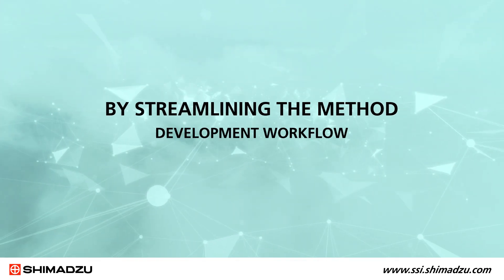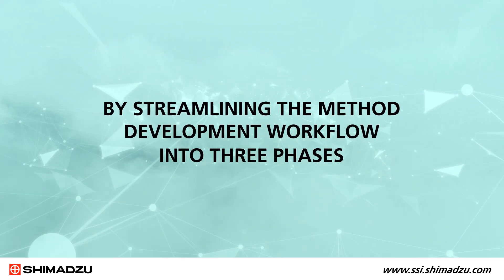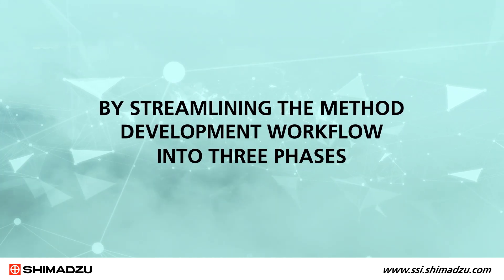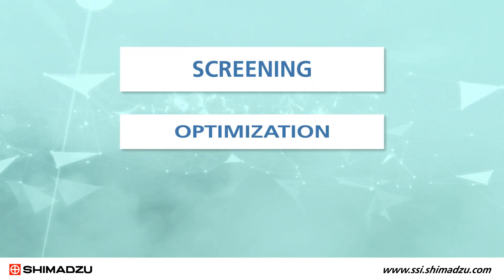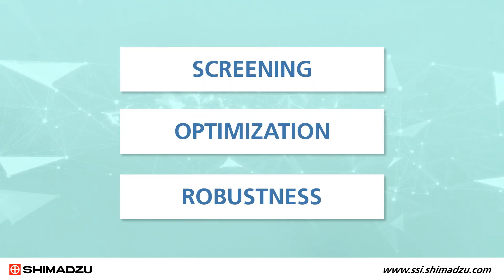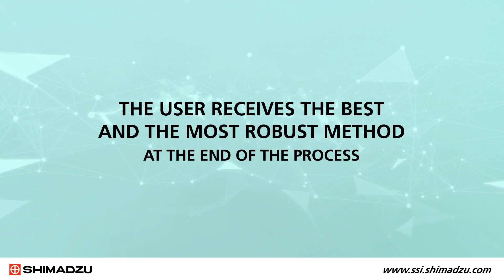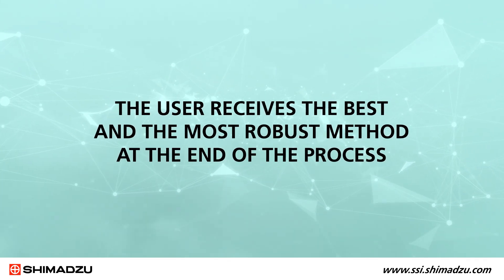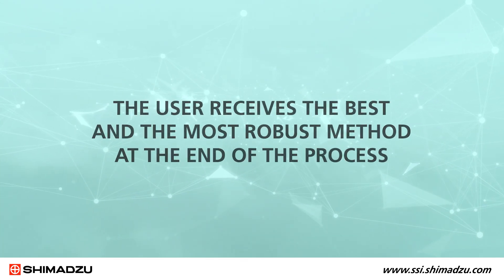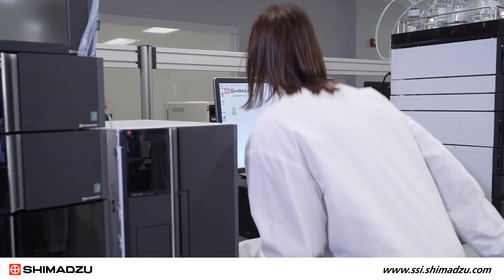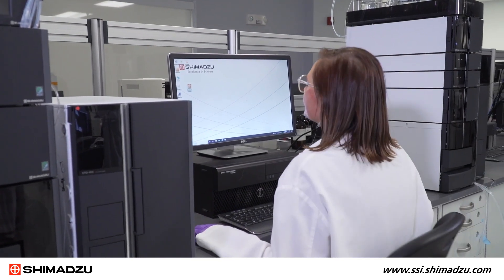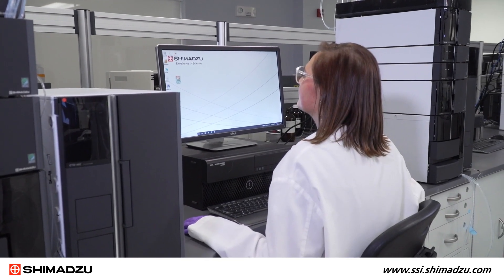By streamlining the method development workflow into three phases — screening, optimization, and robustness — the user receives the best and most robust method at the end of the process. Let's look at each of the phases and the features that each one offers.